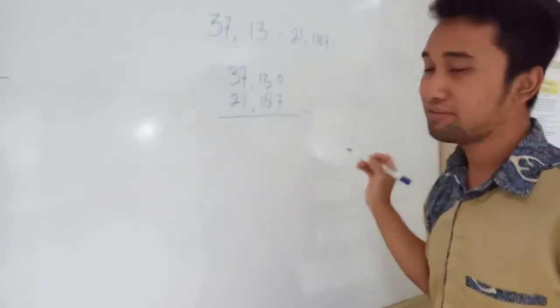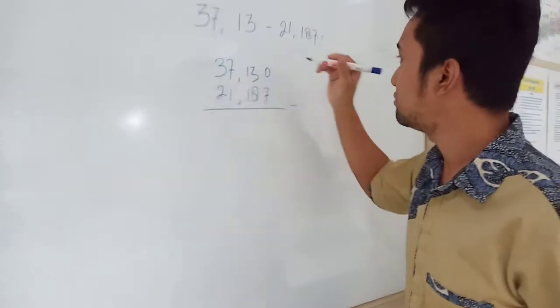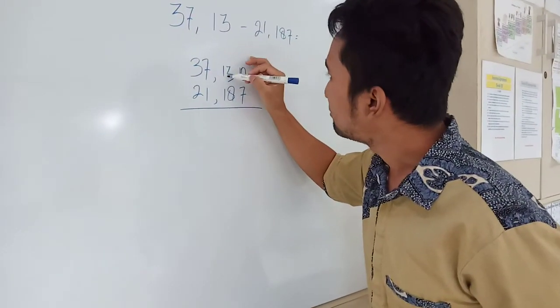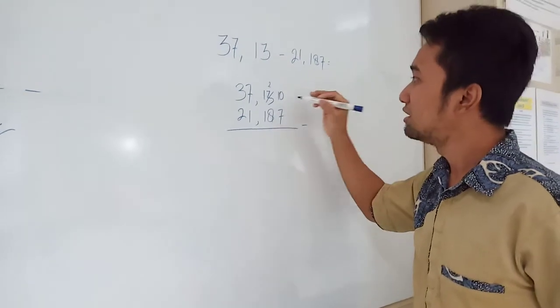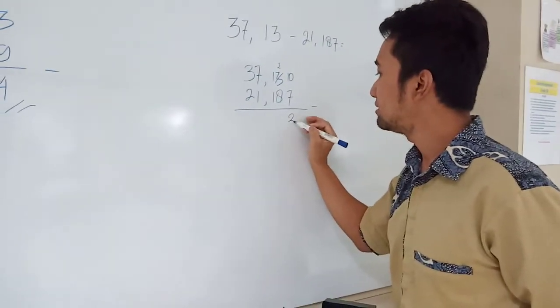Okay. Is it possible 0 minus 7? No. You cannot. So you put 1 here. And borrow from this one. Because this is 3 to be 2. Because minus 1. Good. 10 minus 7 is 3. You know.